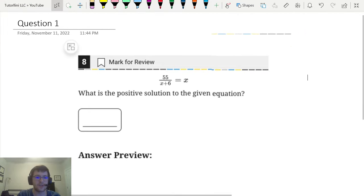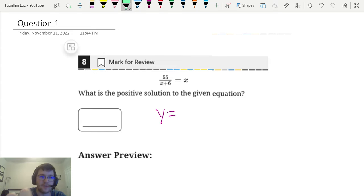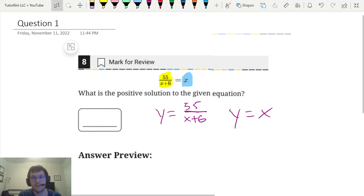If you didn't know, you can solve any equation on the digital SAT math by using Desmos. What you're going to do is graph y equals the left-hand side of the equation. So for this problem that would be 55 over x plus 6. And y equals the right-hand side of the equation. For this problem that would be y equals x. You're going to type both those into Desmos and see where they intersect.